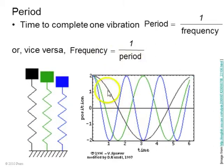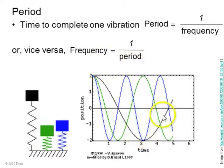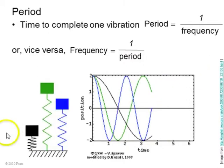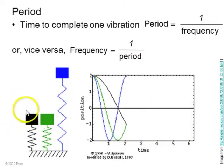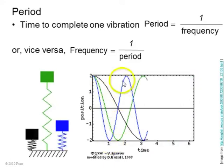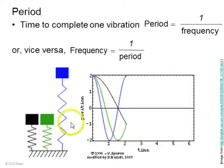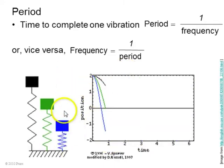In these curves, if you have a long period like this black oscillator, then that is a low frequency oscillation. If you have this blue oscillator, the period is quite a lot shorter, and the frequency is much higher.